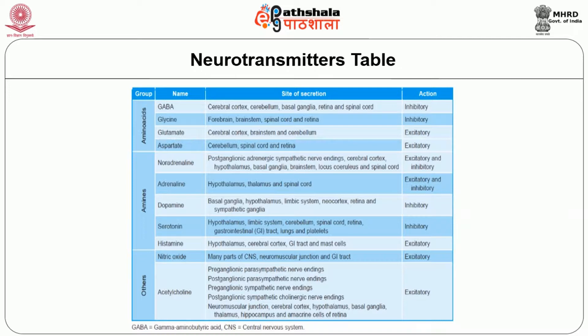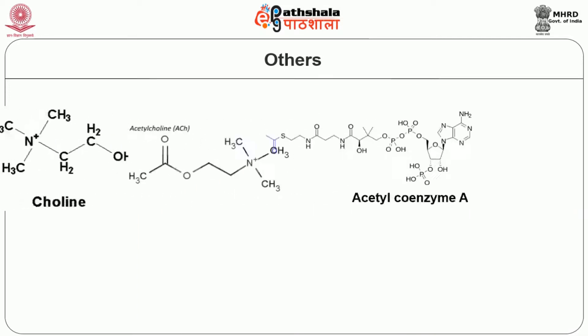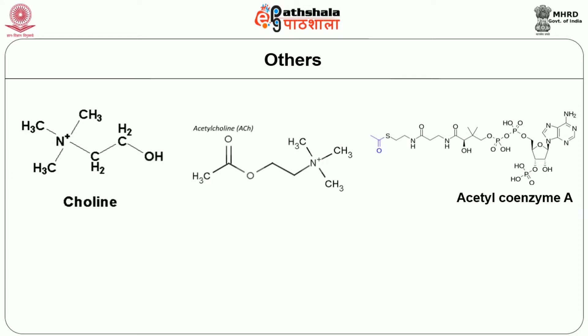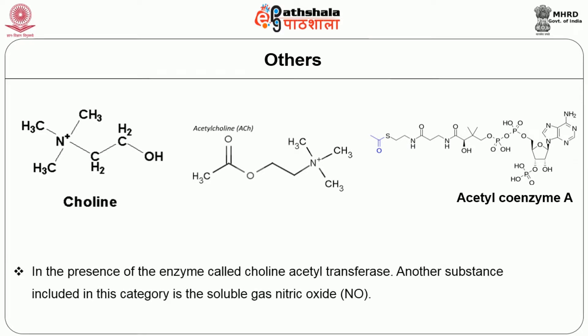The third category is 'others.' Some neurotransmitters do not fit into either of the first two categories. One such substance is acetylcholine, which is formed from choline and acetyl coenzyme A in the presence of the enzyme choline acetyltransferase. Another substance included in this category is the soluble gas nitric oxide.